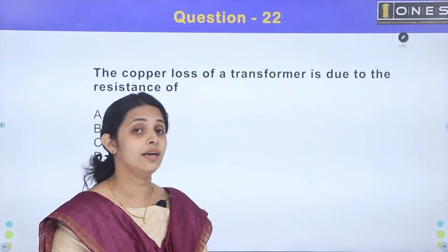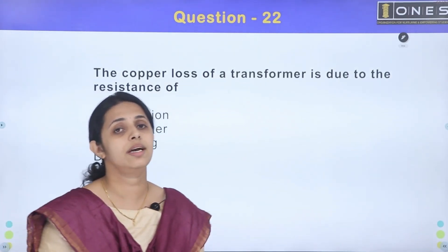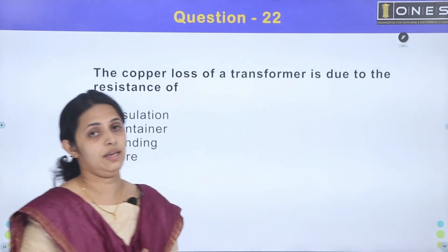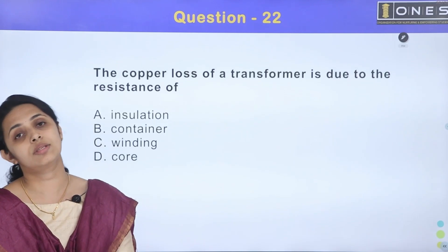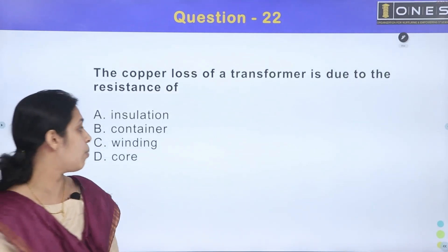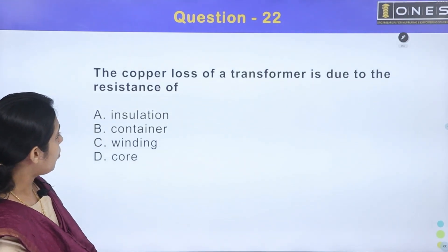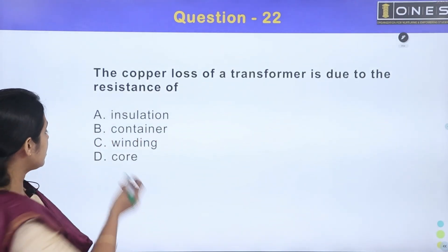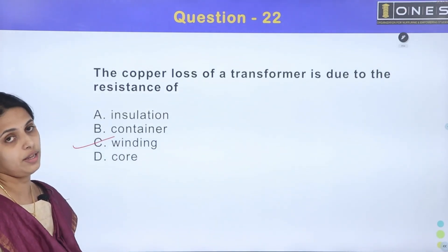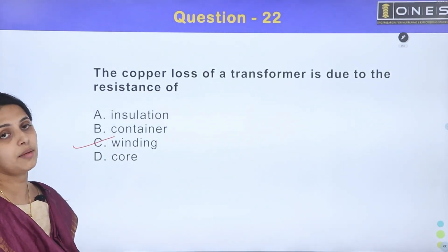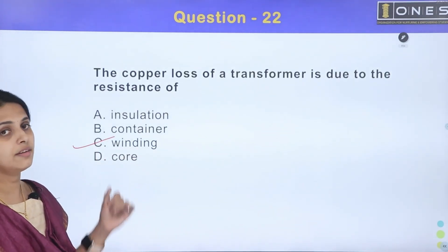When it comes to copper loss, it means resistance. The copper loss in a transformer is in the winding — in the resistance of the winding, we have the copper loss. So the answer is Option C: winding.